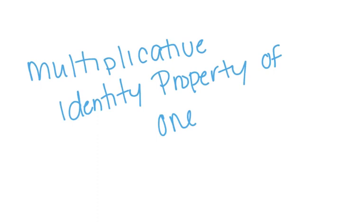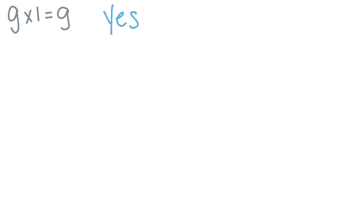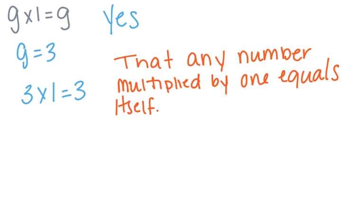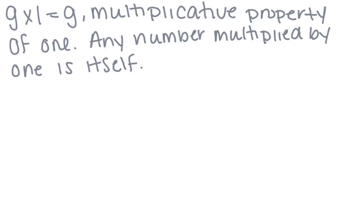Now let's talk about the multiplicative identity property of 1. We are going to be using the equation G times 1 equals G. Remember, a letter in a mathematical expression represents a number. Can we replace G with any number? Yes, we can replace G with any number. Using G equals 3, our equation reads 3 times 1 equals 3. We can observe that any number multiplied by 1 is going to equal itself. So G times 1 equals G shows the multiplicative identity property of 1.